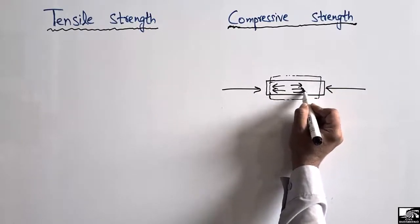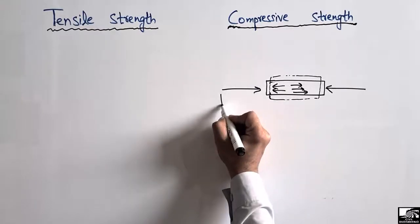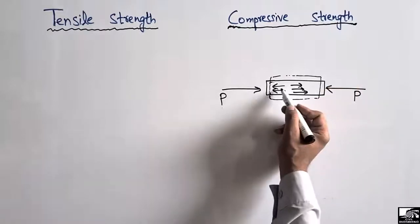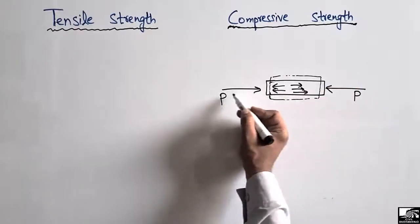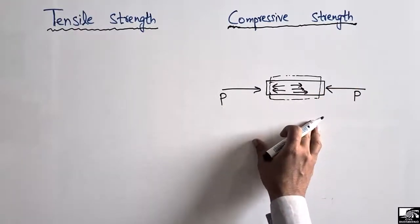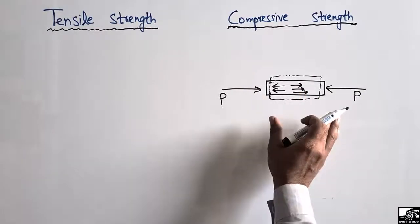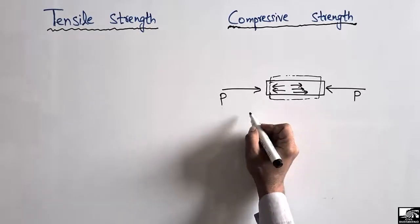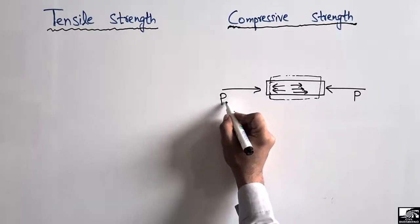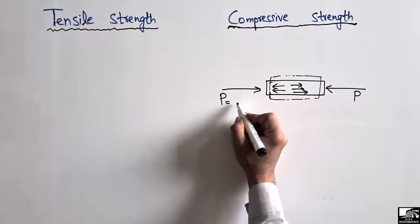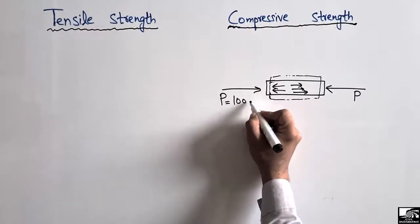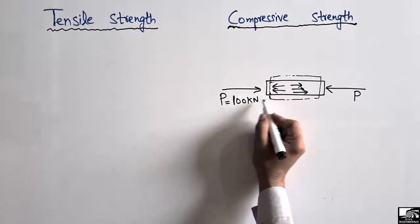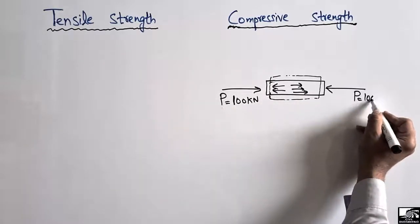The resistance to this compressive load is called the compressive strength of the material. Let's consider this is load P acting on the material, and there is some internal resistance created in order to resist this compressive load. This internal resistance divided by the cross-sectional area of the object is known as the compressive strength. Let's suppose the maximum compressive load this material can take is 100 kN.